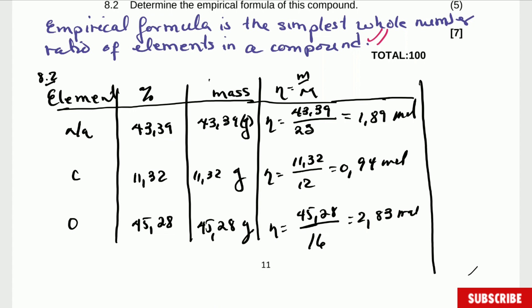We are going to get the ratio. Now how we get the ratio? We divide every one by the smallest one, in this case is 0.94. So we say 1.89 divided by 0.94. This one is, let me write here ratio.